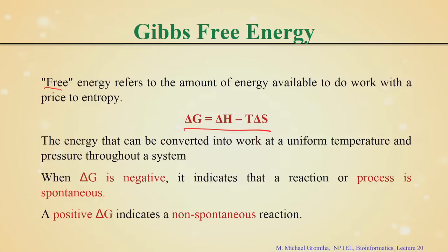We call it free energy because it is energy available to do work at the expense of entropy. If delta G is negative, the process is spontaneous — we can do work without any extra energy input. If it is positive, it is non-spontaneous and we need to supply energy. We usually use delta G when it is negative, meaning the work can be done spontaneously.